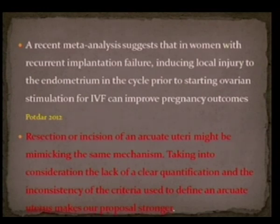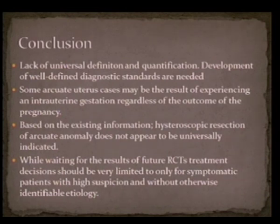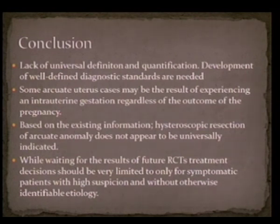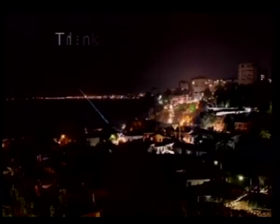Taking into consideration the lack of clear quantification and inconsistency of criteria makes our proposal stronger. In conclusion, there is still a lack of universal definition and quantification of arcuate uterus and development of well-defined diagnostic standards is needed. Some arcuate uterus may be the result of experiencing an intrauterine gestation, regardless of the outcome of the pregnancy. Based on existing information, hysteroscopic resection of an arcuate anomaly does not appear to be universally indicated. While waiting for the results of future randomized studies, treatment decisions should be limited only to symptomatic patients with high suspicion and without otherwise identified etiology. Thank you.